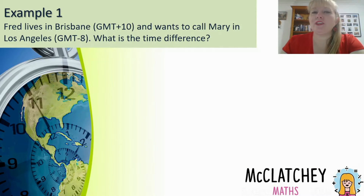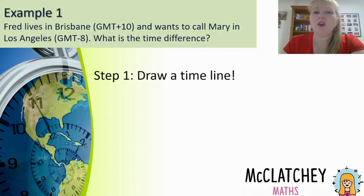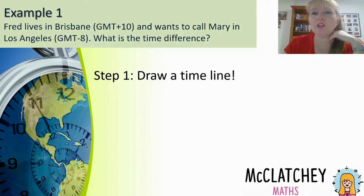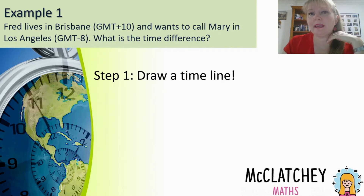Our first example: Fred lives in Brisbane, GMT plus 10, and wants to call Mary in Los Angeles, GMT minus 8. What is the time difference? I always think it's a great idea whenever you've got any of these worded questions to draw a picture of some kind to show you what's going on. I like to use a timeline — it's a great visual to explain who is where and what's happening.